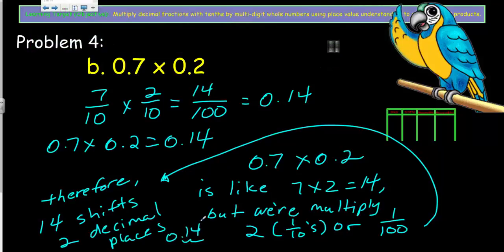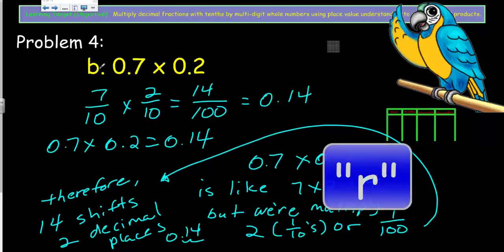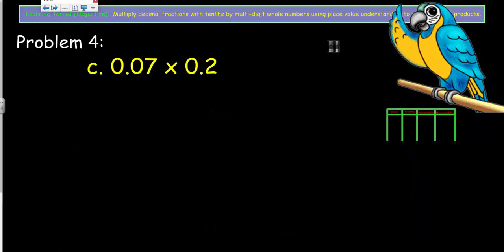For the final example: seven tenths times two tenths equals fourteen hundredths. I wrote it as 7/10 times 2/10 equals 14/100, which as a decimal is 0.14. Seven tenths times two tenths is like seven times two equals fourteen, but we're multiplying by two one-tenths, which is one hundredth, so the digits shift two decimal places to the right. That makes it reasonable — and I think that covers more than enough problems for this lesson.